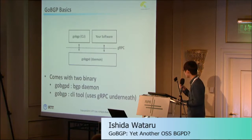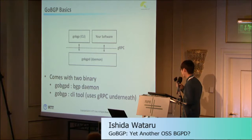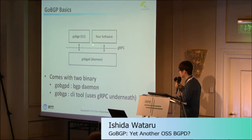I'd like to share the basics of GoBGP. When you install GoBGP, it comes with two binaries. One is gobgpd, which is obviously the BGP daemon running on your server. The other is gobgp, which is the CLI tool. It uses gRPC underneath, so you can use the CLI tool to configure the daemon, but you can also plug in your own software to configure or retrieve stats from the daemon.